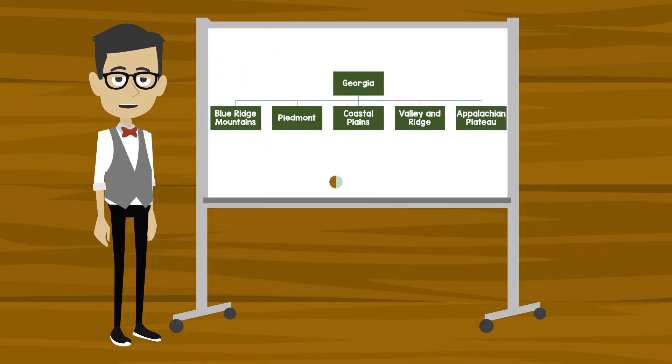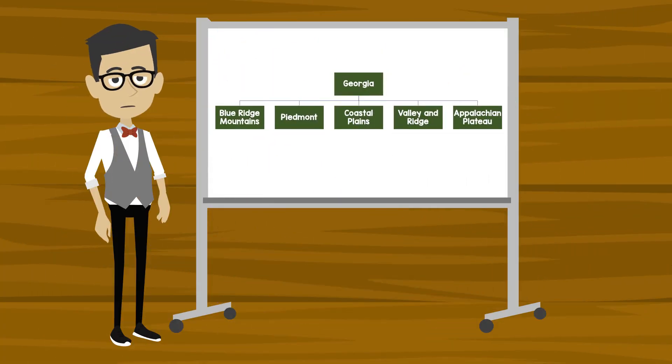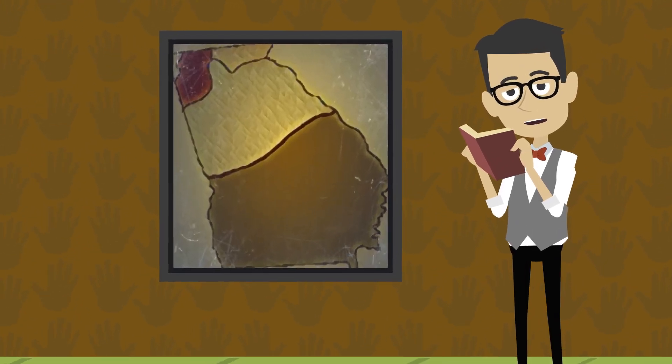As I mentioned earlier, there are five geographic regions in the state of Georgia. The plants, animals, and habitats found in each area are unique.